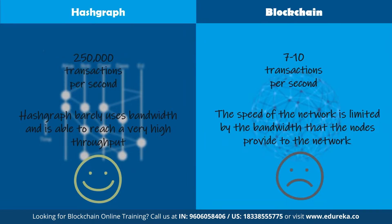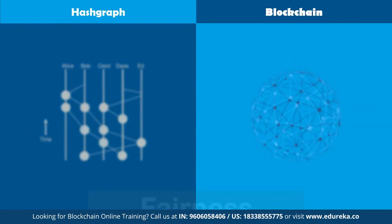The major component of hashgraph is its virtual voting and gossip mechanism, which makes the system much faster, fairer, and more secure than a blockchain. The next comparison point is fairness.